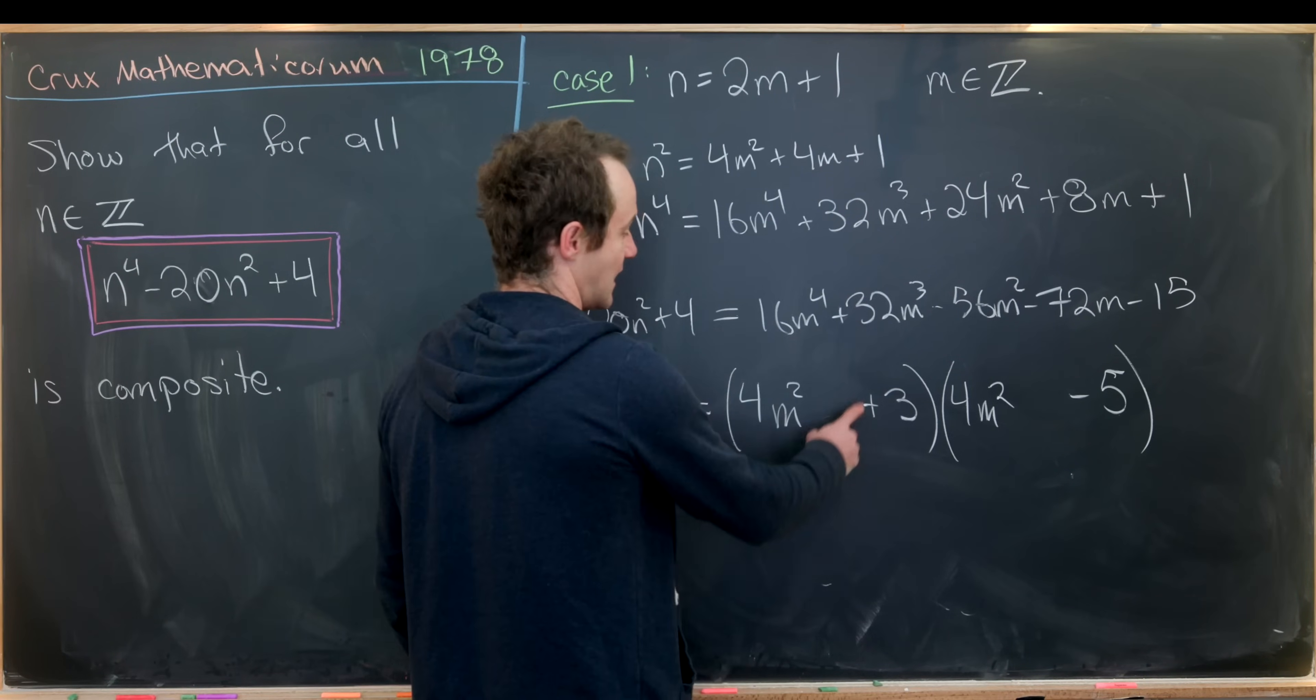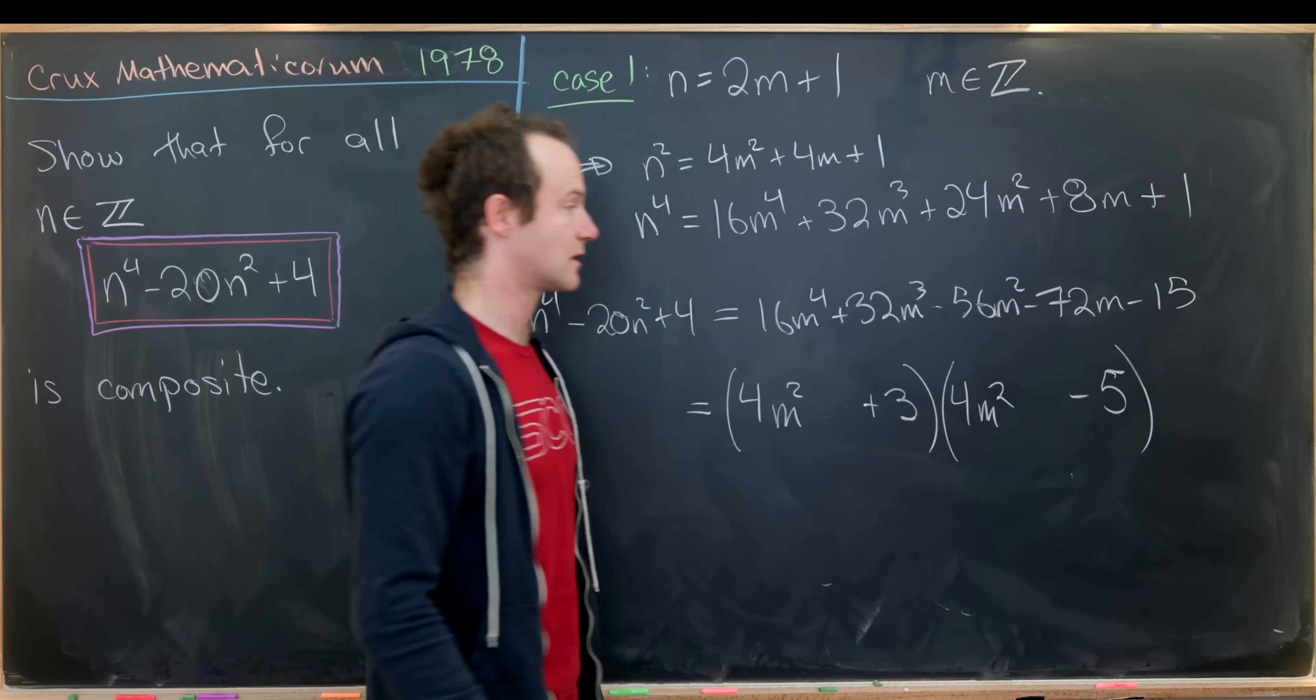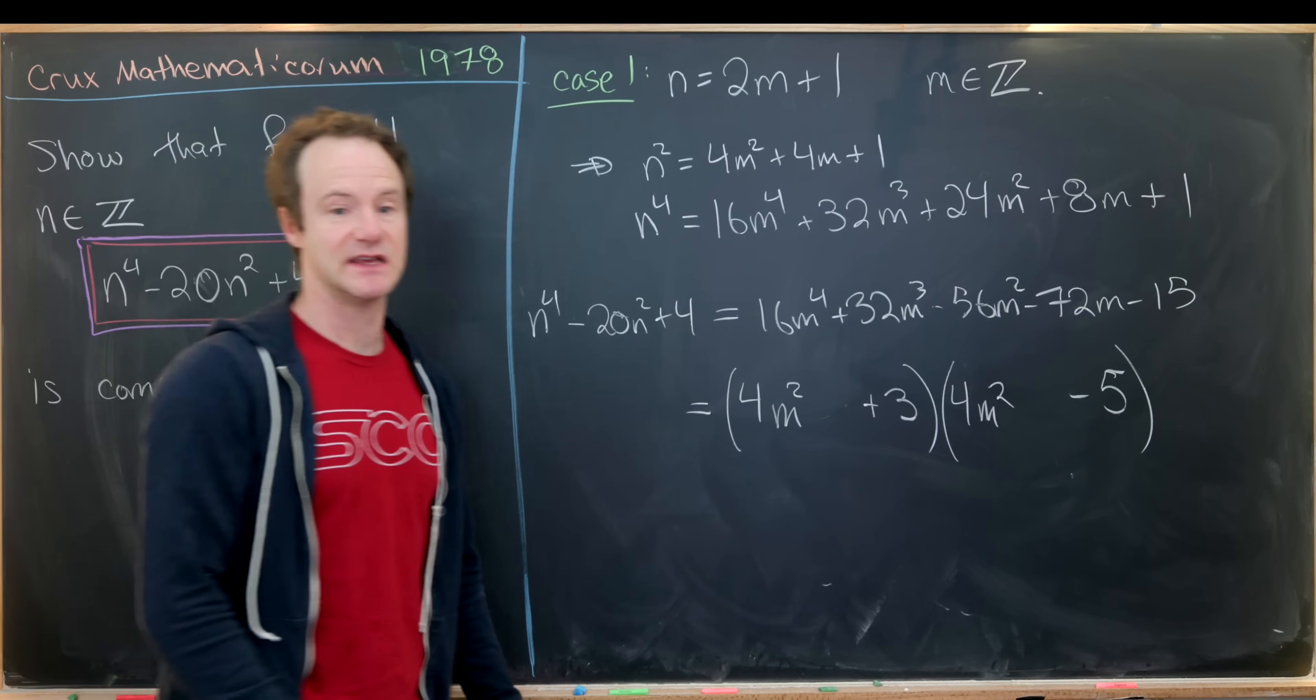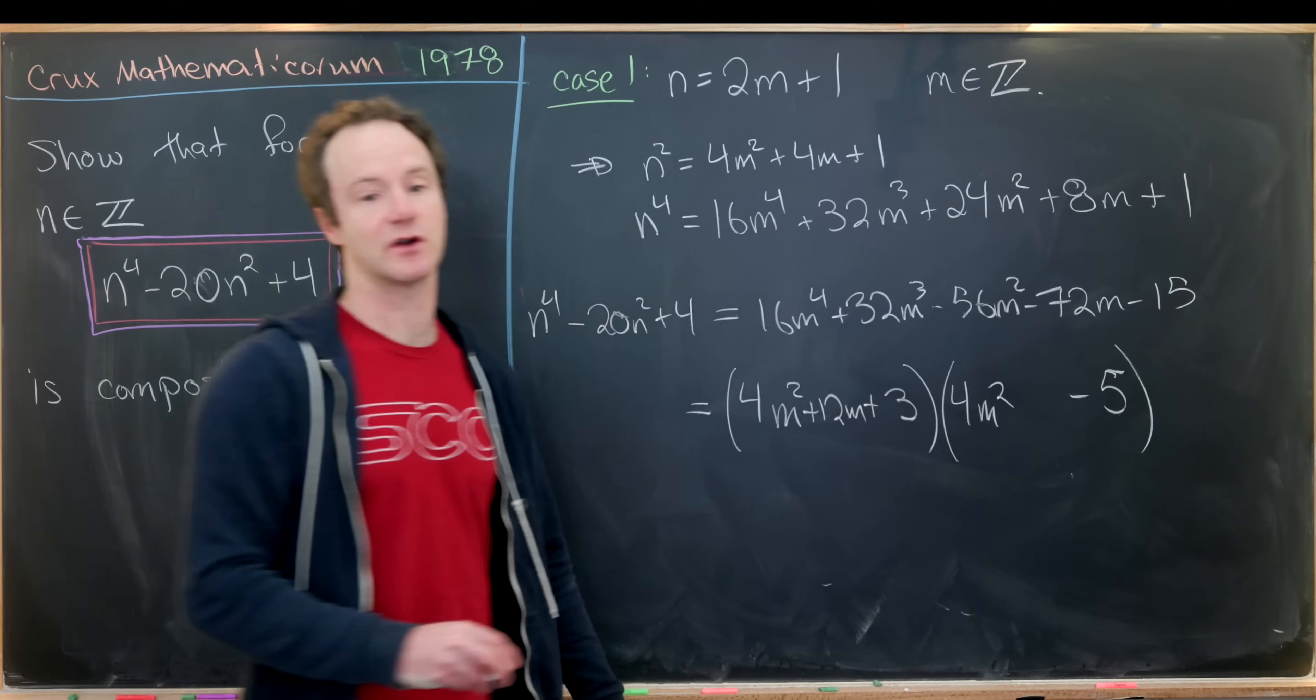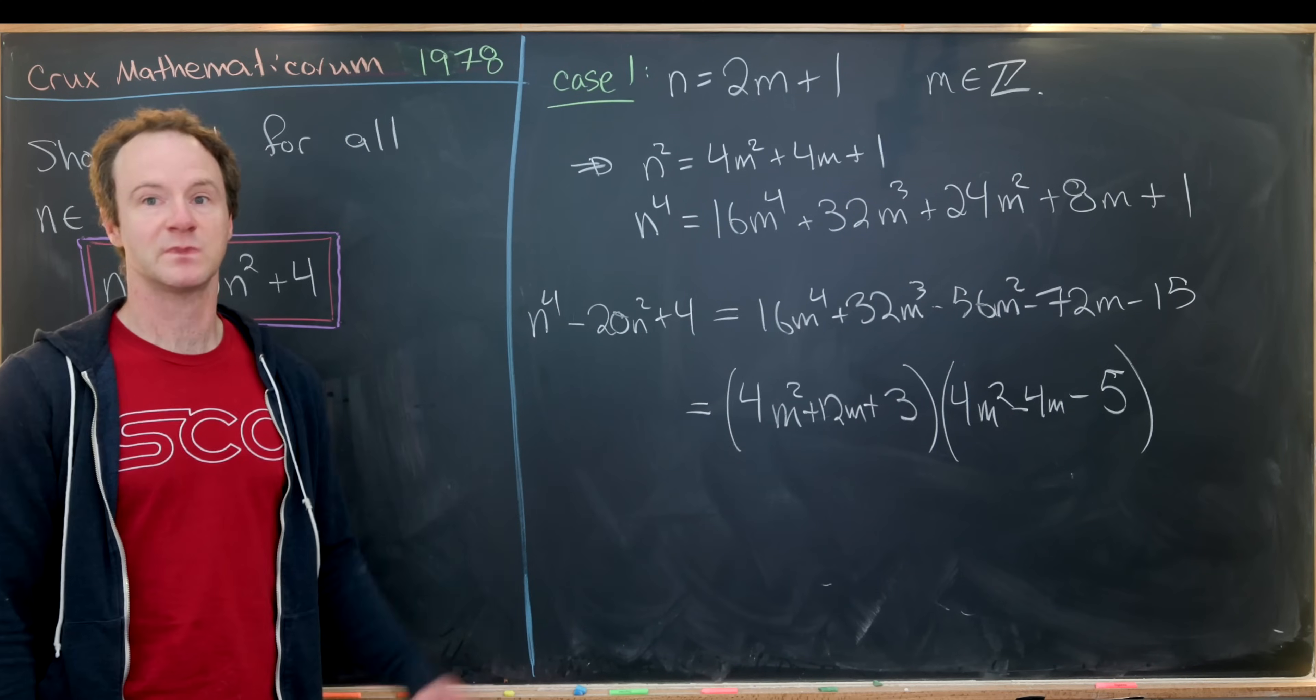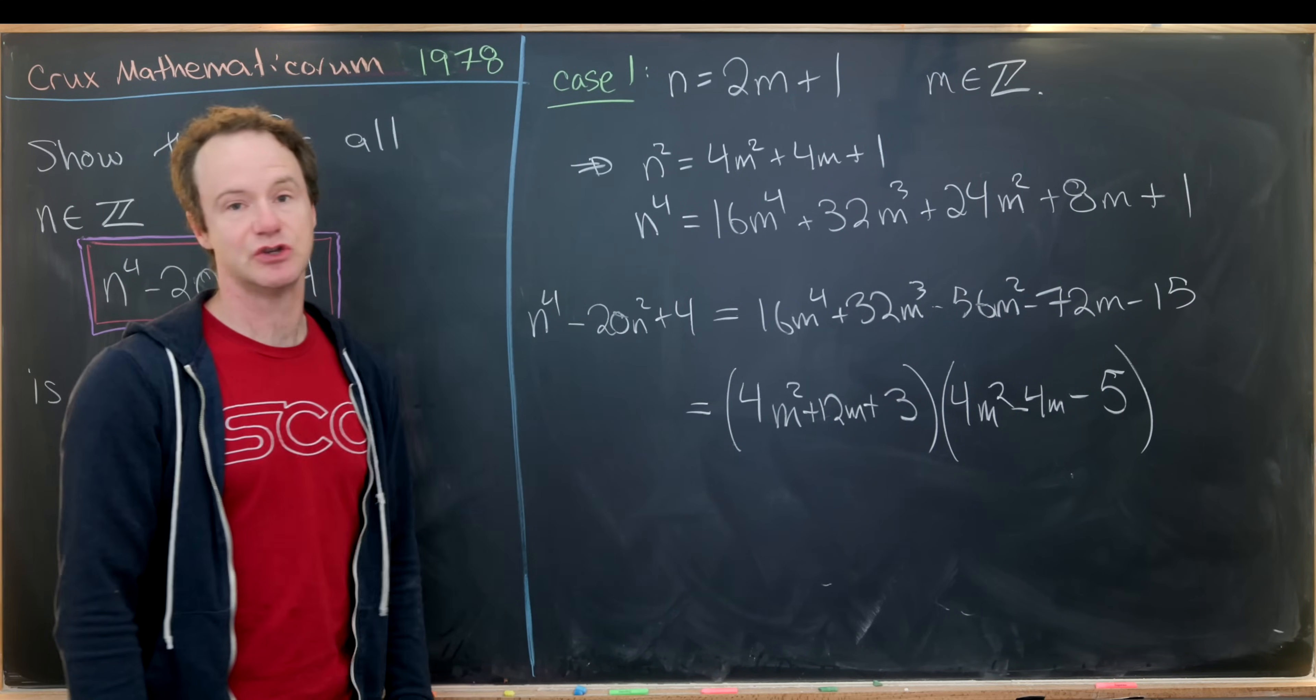Then maybe you could add am here and bm here, multiply it all out and get a system of equations. But what you'll end up finding is that you need 12m in the first term and minus 4m in the second term. So we've successfully factored our thing into two objects.